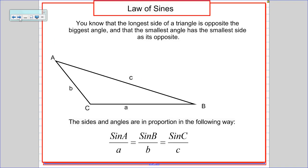We know that the longest side of a triangle is opposite the biggest angle, and the smallest angle has the smallest side as its opposite. But this isn't a linear relationship. It's not like if an angle is twice as big, its opposite side is twice as big. They're related in this proportional way that the sine of the angle divided by the length of the side should be in proportion.